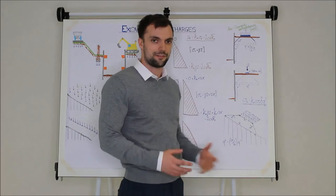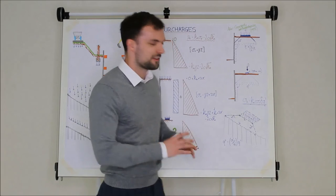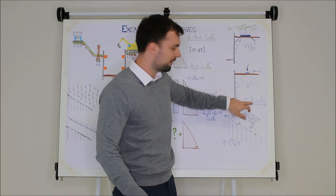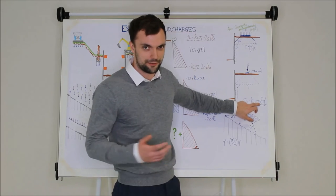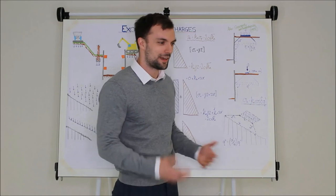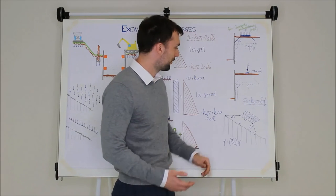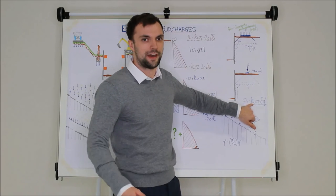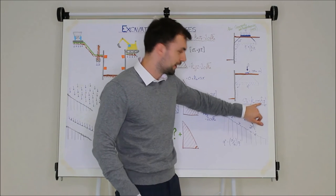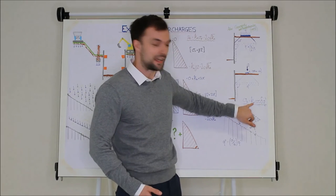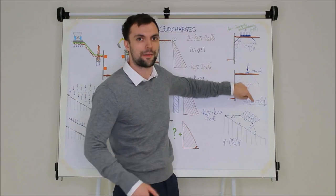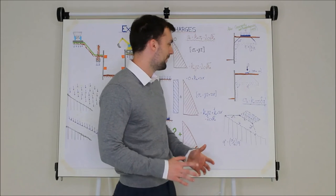I've written this here, Ka cos delta Q dash. The cos delta, that's involving your wall friction. One thing to be careful of, if you've already modified your Ka to take into account your wall friction, you shouldn't really apply this cos delta a second time. It's kind of giving you the benefit twice, so if you're going to use the unmodified Ka without wall friction, feel free to apply a bit of wall friction to that surcharge. If you've already modified your Ka, take that cos delta out of that equation. You don't want to be too optimistic with these.